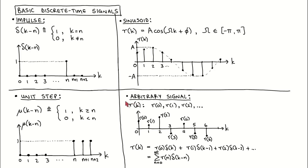An arbitrary discrete time signal can simply be described by a sequence of real numbers, where each number corresponds to a specific time index. However, it is useful to describe it as a sum of scaled digital impulses. The first term is the signal value at k equal to 0 multiplied with an impulse centred at k equal to 0. The second term is the signal at k equal to 1 times an impulse delayed by 1 time step, and so on. This can be written in sigma notation. Here we assume that the signal for negative time indices is 0, which is not necessary for the definition of discrete time signals, but is an assumption we will often make.